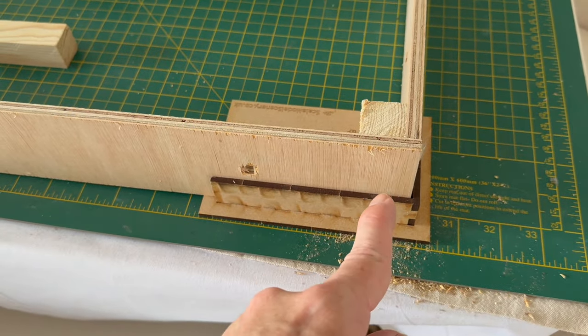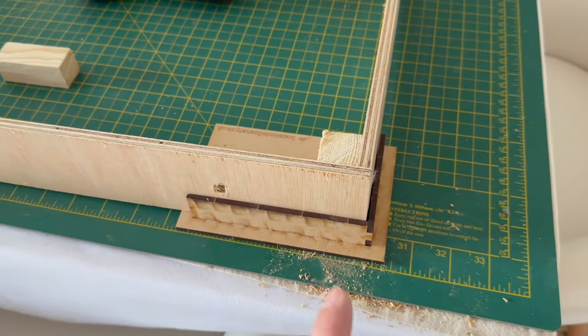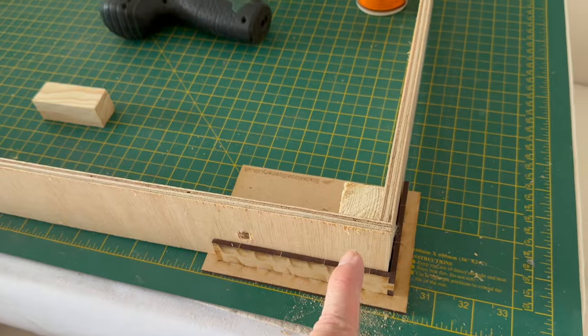Then with the glue in place, I'll be clamping it in the corner there with my fingers just to get it going, just long enough for the glue to hold it in place while I put a drill hole in with that drill.